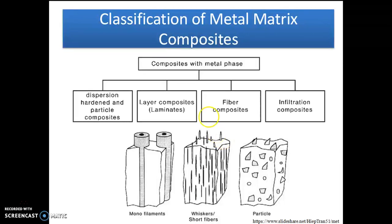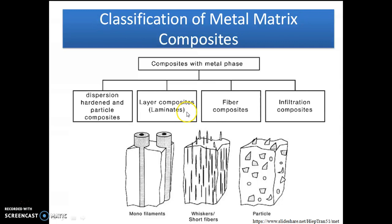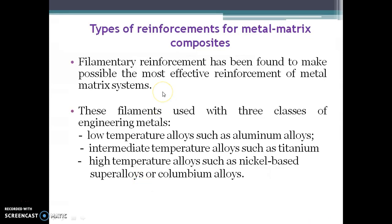What are the various types of classification of metal matrix composites? Composites with a metal matrix are divided into four categories: dispersion-hardened and particle composites, layer composites also called laminates, fiber composites, and infiltration composites.